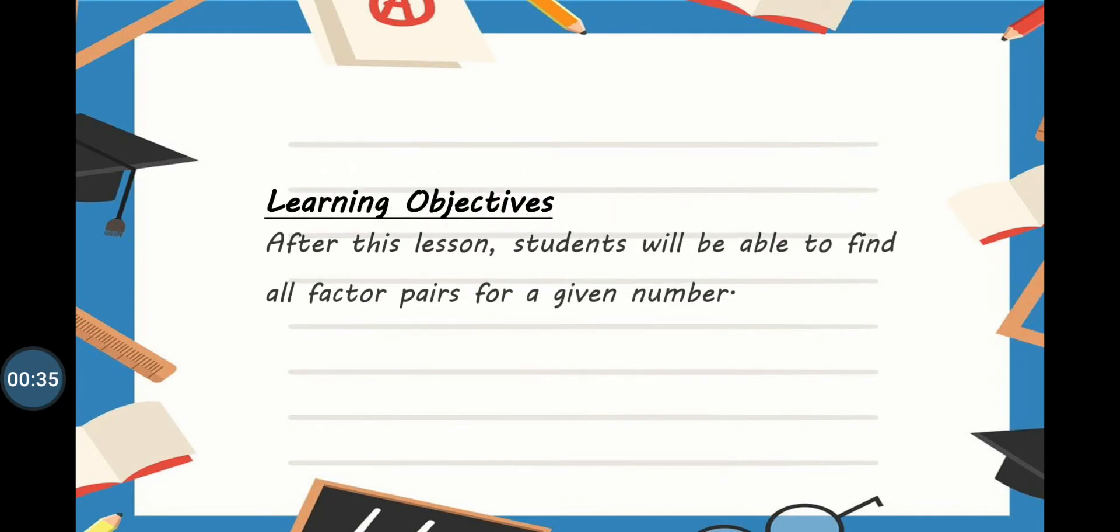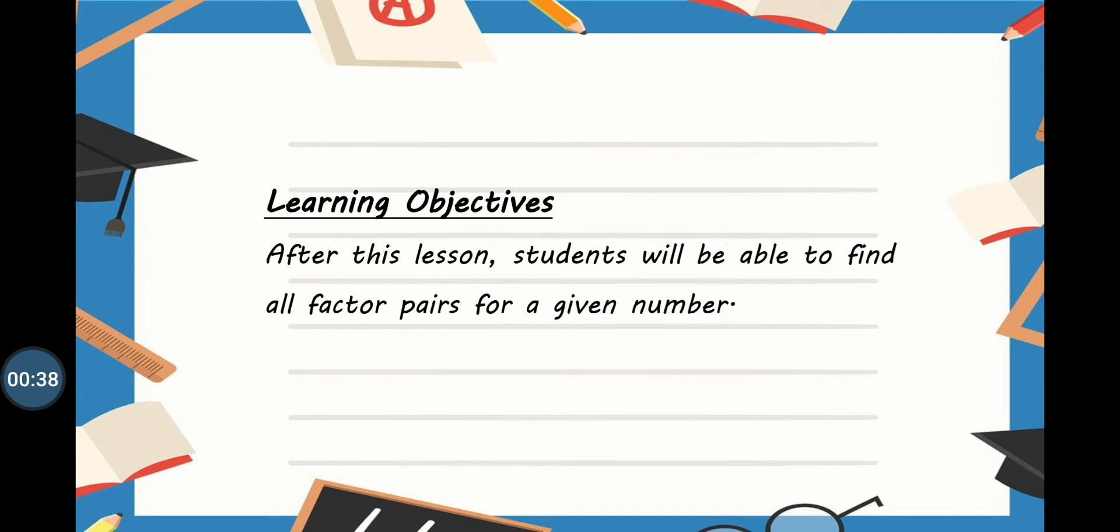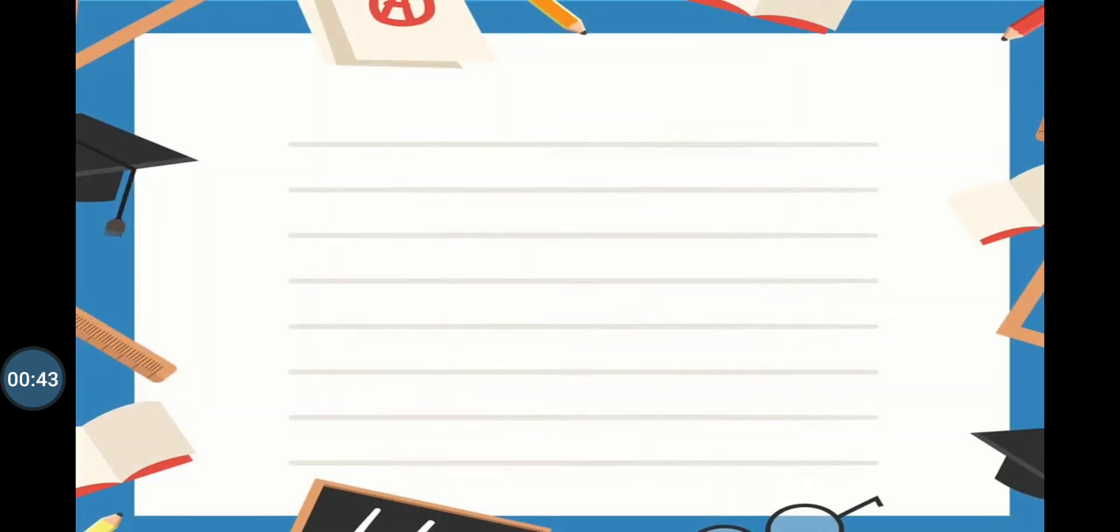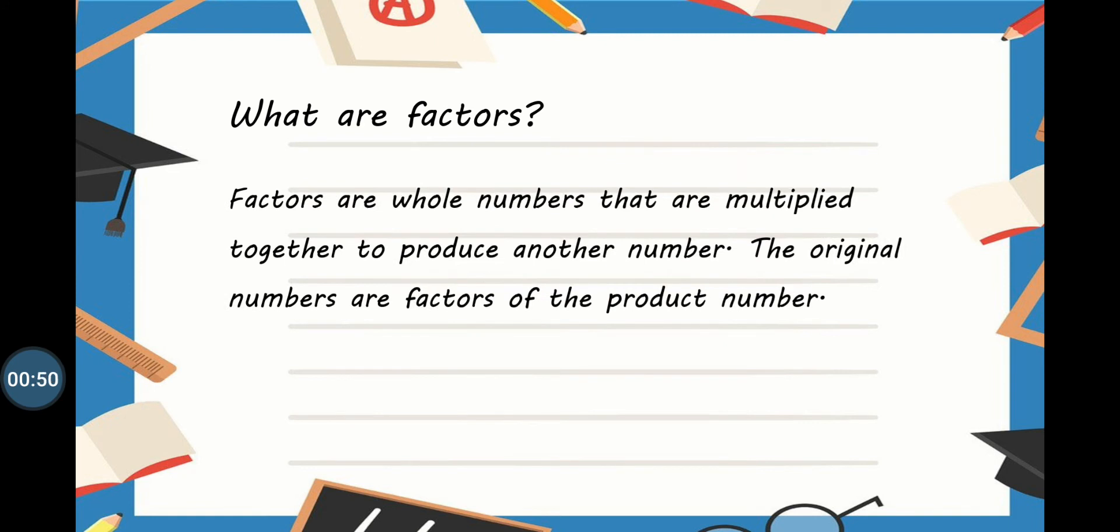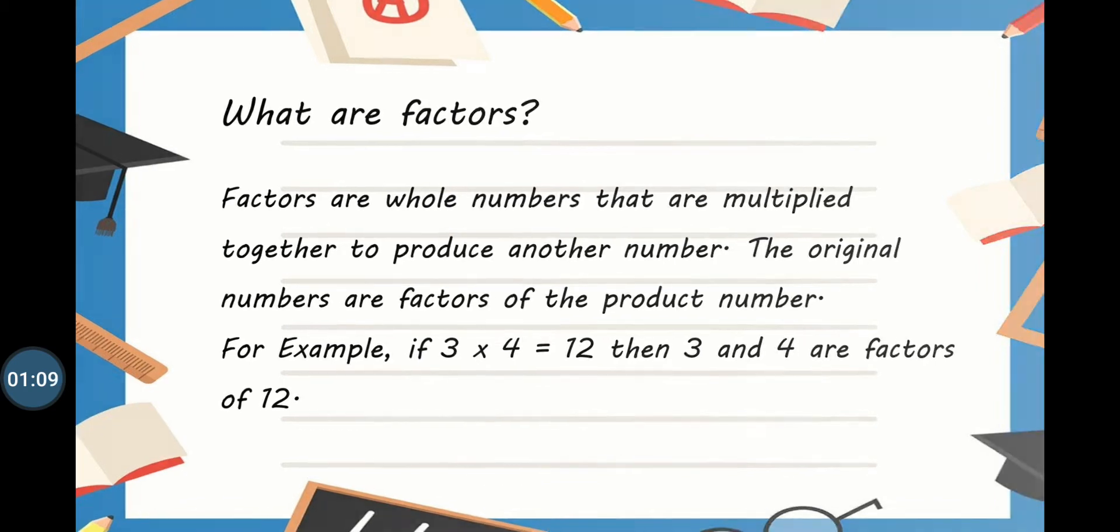Our objectives of this lesson are that we will all be able to find the factor pairs for a given number. Let's recall our memory - what are the factors? The factors are the whole numbers that are multiplied together to produce another number. The original numbers are the factors of the product number. For example, if 3 and 4 we are multiplying, we are getting 12 as a new number, and 3 and 4 are the factors of 12.